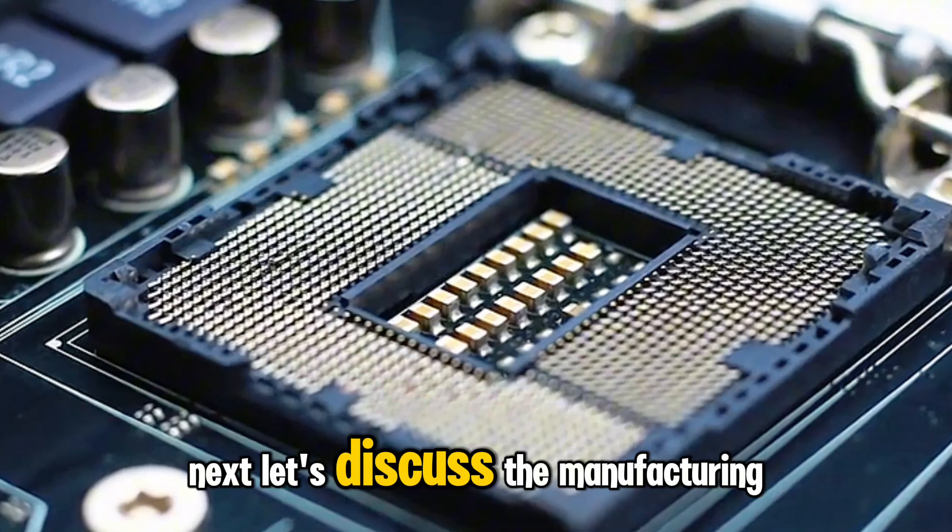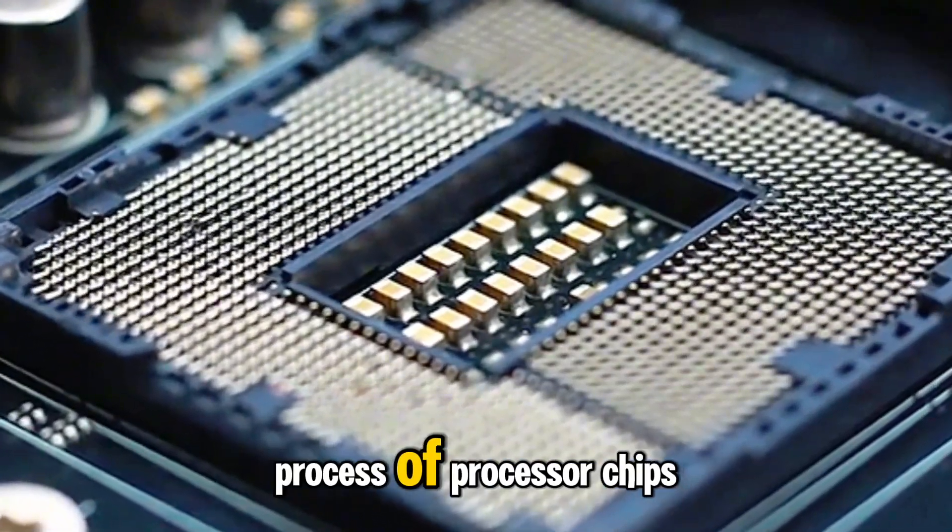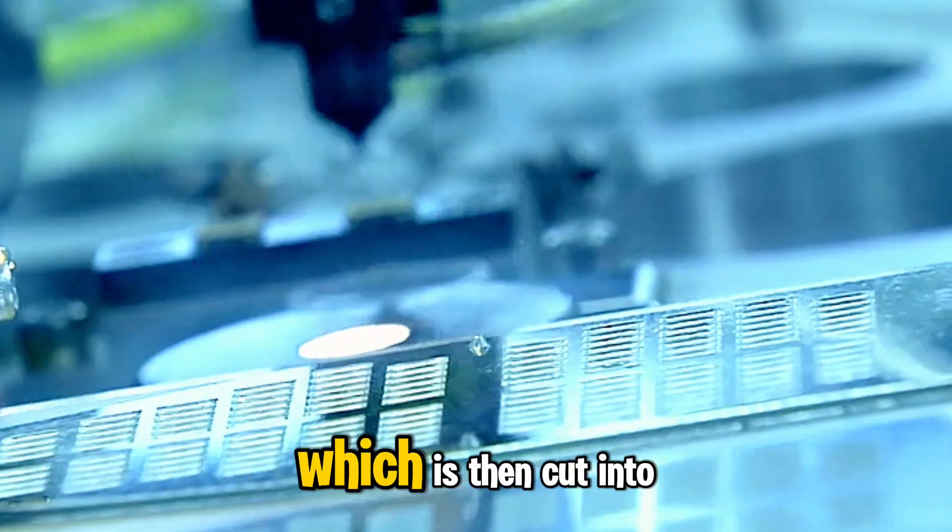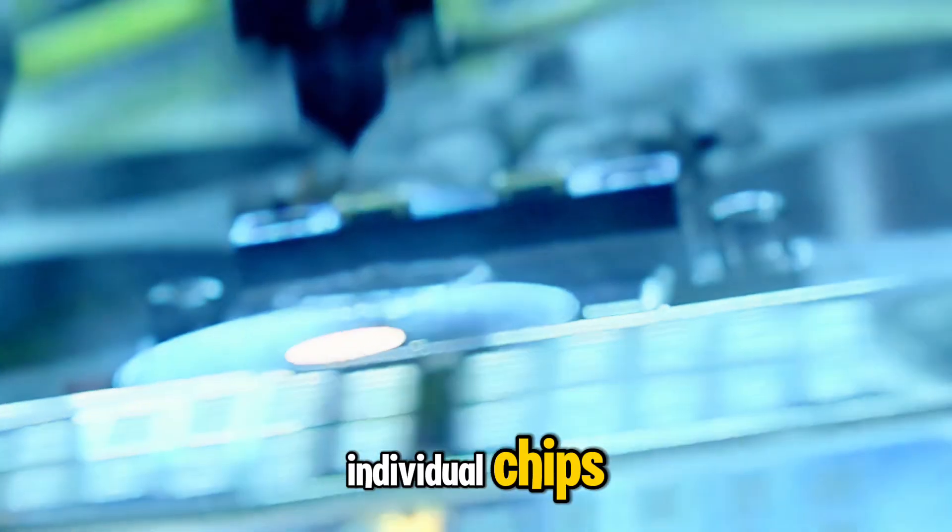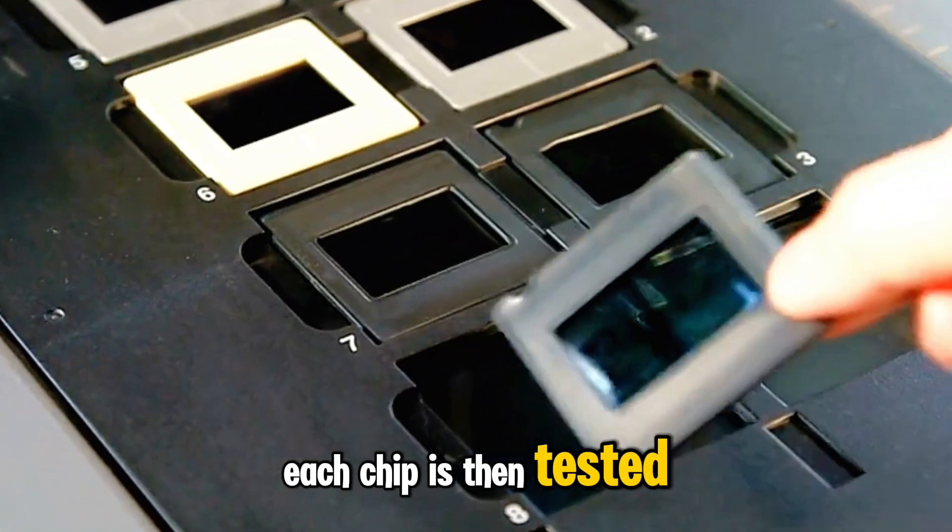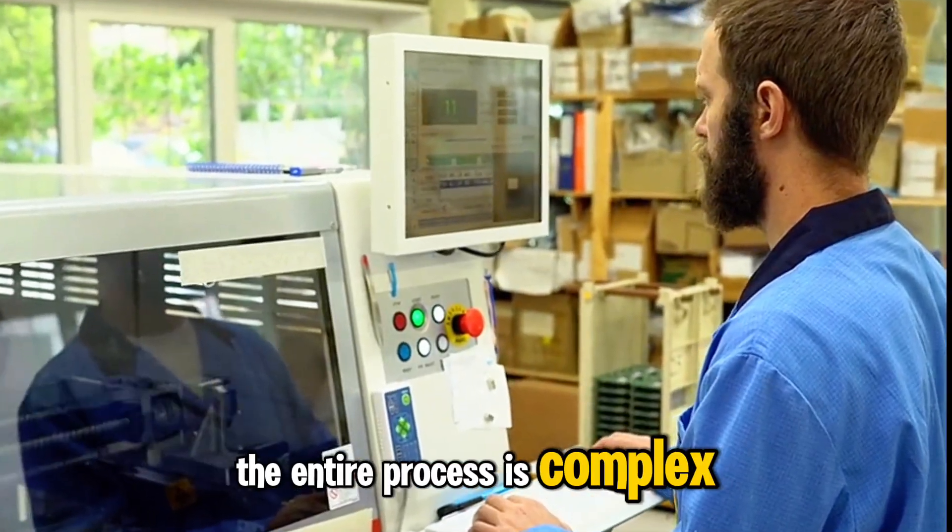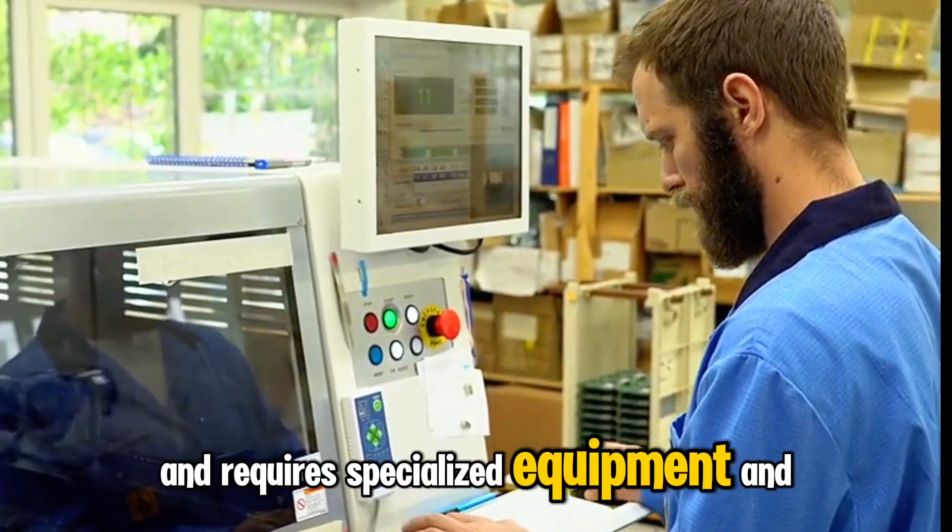Next, let's discuss the manufacturing process of processor chips. The process starts with creating a silicon wafer, which is then cut into individual chips. Each chip is then tested for defects and packaged. The entire process is complex and requires specialized equipment and knowledge.